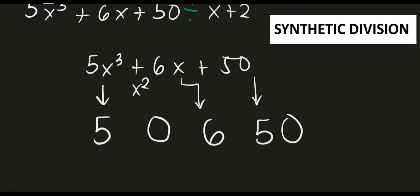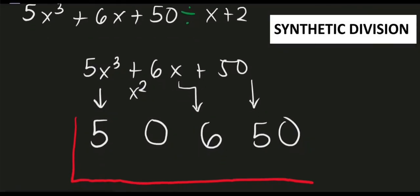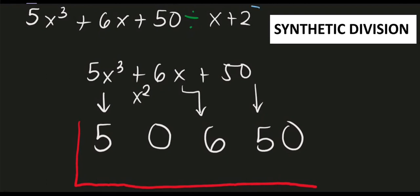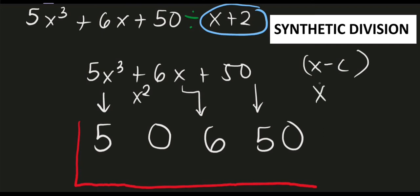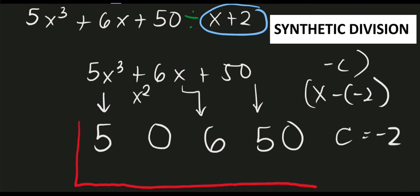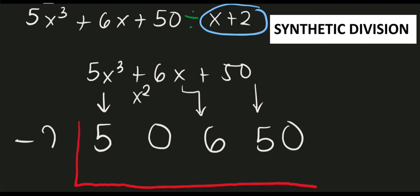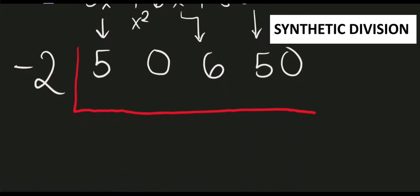Construct the bar separating coefficients from the divisor. Since we have x plus 2, we express it as x minus (negative 2), so the value of c is negative 2. Our technique: since the sign is plus, automatically use negative 2. We will use negative 2 as our divisor for this problem.